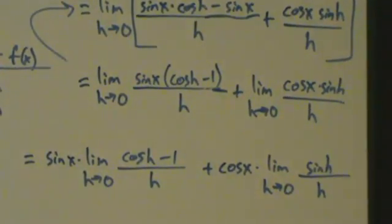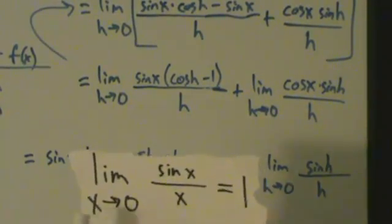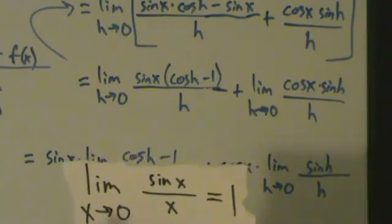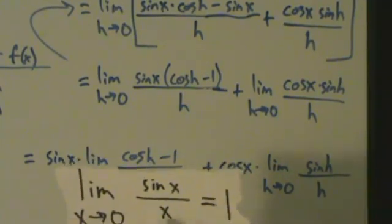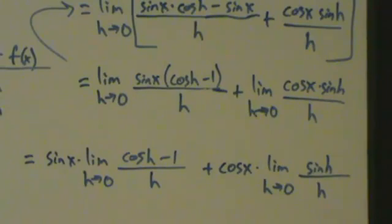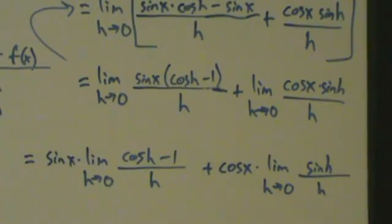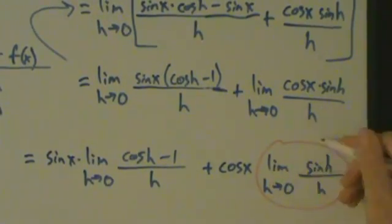Do these look familiar? The limit as h goes to 0 of sine h over h is one of our special trig limits. It doesn't matter what we call the dummy variable. This limit equals 1.